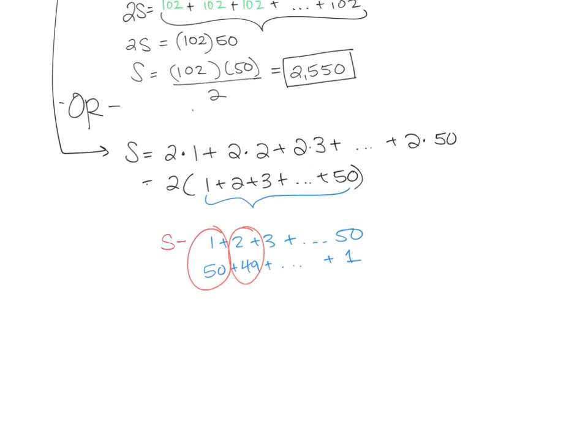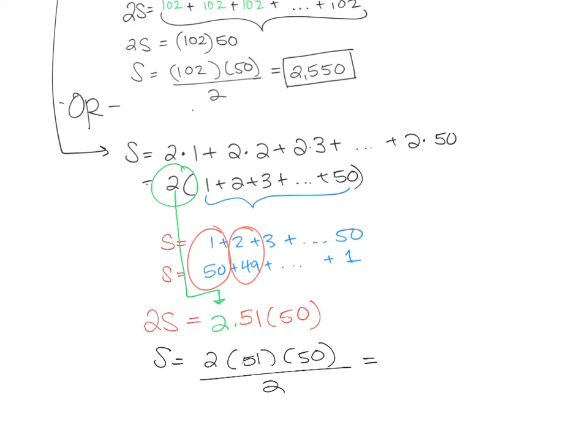So if we're going to take that sum again and write it out twice, what we're saying is that we're going to have 51 50 times. Now don't forget that we had factored this 2 out there. And so then what we would say is, well then the sum of just one of those would be 2 times the 51 times there's 50 of those terms over 2, which will be equal to that 2,550 still. So either way is totally fine.